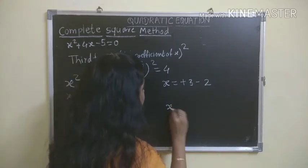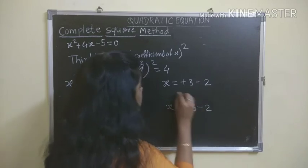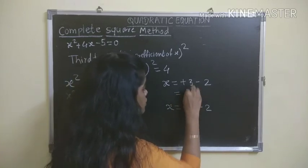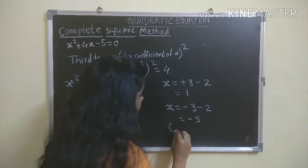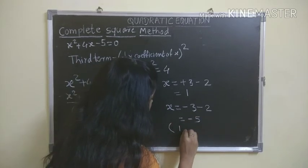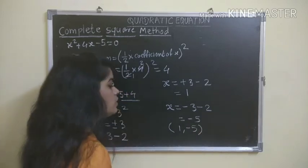Here the answer is x = +1. Here the answer is x = -5. So in this way I get two answers for x: 1 and -5.